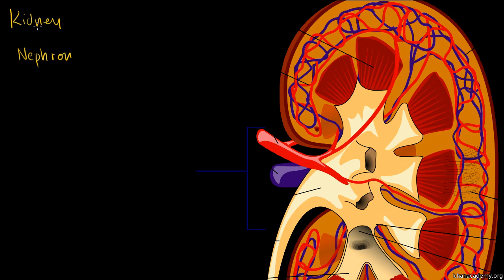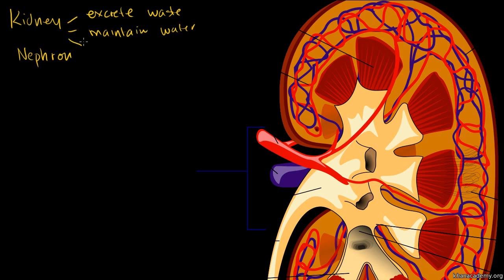The kidney — we have two of them. They're the organ most famous for producing or allowing us to excrete waste. But part of that process, it also helps us maintain our water, the correct level, and actually the amount of salts or electrolytes we have, and our blood pressure. It also produces hormones, but I really just want to focus on these first two to understand the overview function of the kidney.